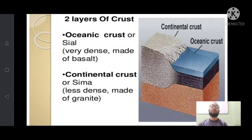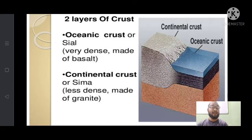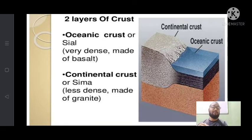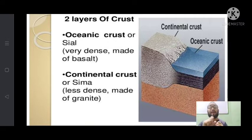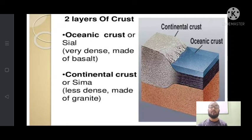There are two layers within the crust: the oceanic layer and the continental layer. You can see both in the picture. Oceanic crust means the solid land area under the water. The continental crust — covering hills, mountains, and plains — extends zero to 35 kilometers, while oceanic crust extends zero to 5 kilometers. The oceanic crust is also called Sima; it is very dense and made of basalt rocks. The continental crust is less dense and made of granite.